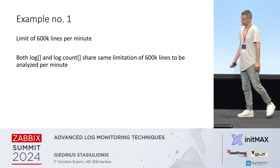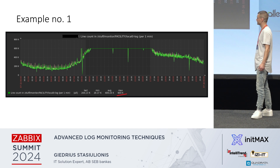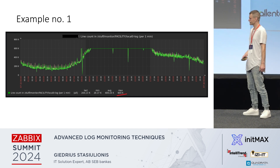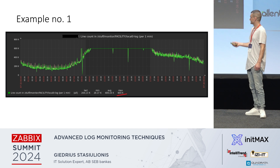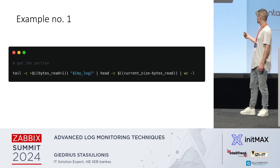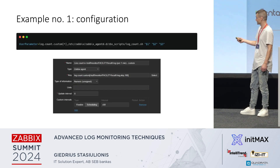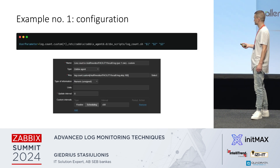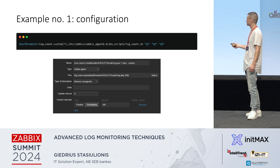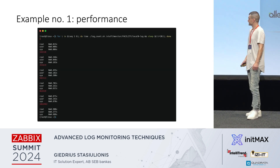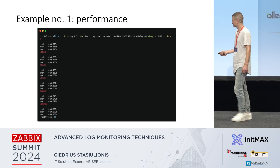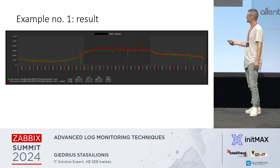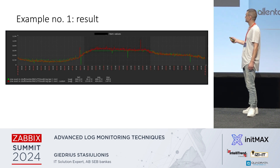First example: the 600k lines per minute limit. Log and log count unfortunately have this hard limit — if you have more, you'll see a flat line at maximum value 600k. If you want to see the real situation, after slicing the data in the script, you simply count the number of lines you have. Configuration is simple: provide the log file, whether to skip or read if the agent stops, and for how long to consider the stop period. We can count a million lines in less than a second with this approach — the red line will present you real numbers.